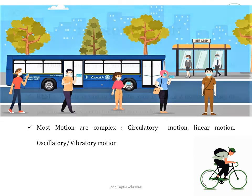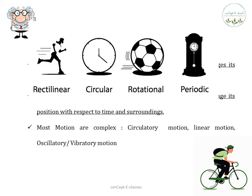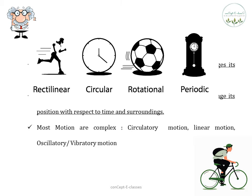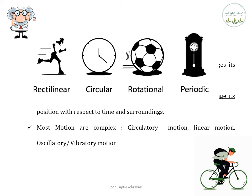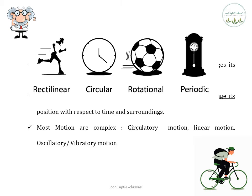Motions can be of different types depending on the type of path the object takes. Some objects may move in a straight line — we call that rectilinear motion. Some may take a circular path — circular or circulatory motion. Some may rotate, some may vibrate, and there are situations involving a combination of these. In this chapter we shall first learn how to describe the motion of objects along a straight line, and in part 2 we learn how to express such motions through simple equations and graphs.